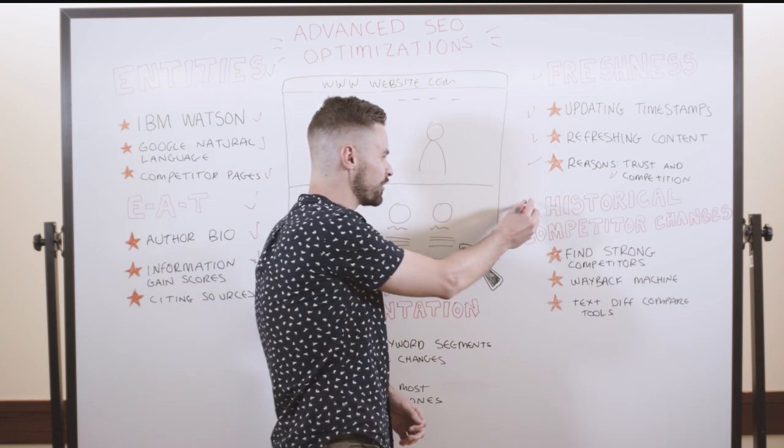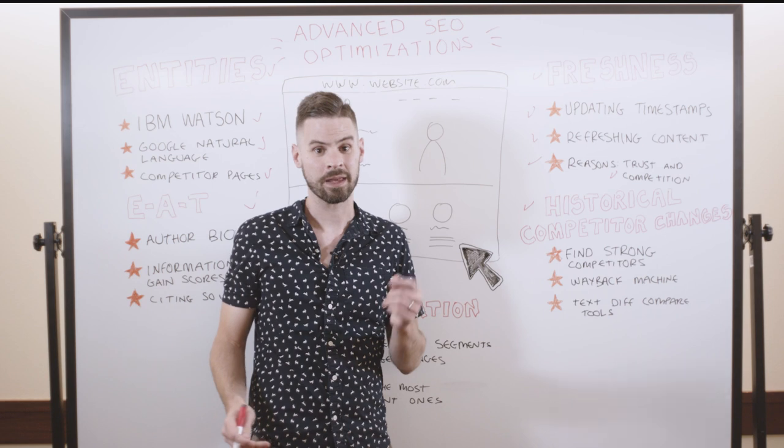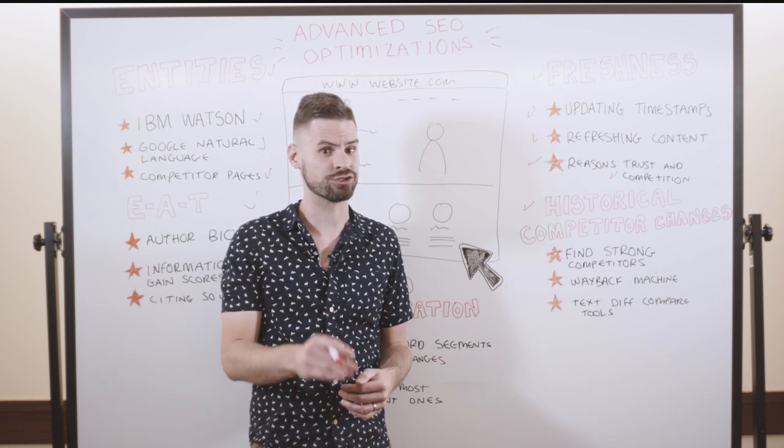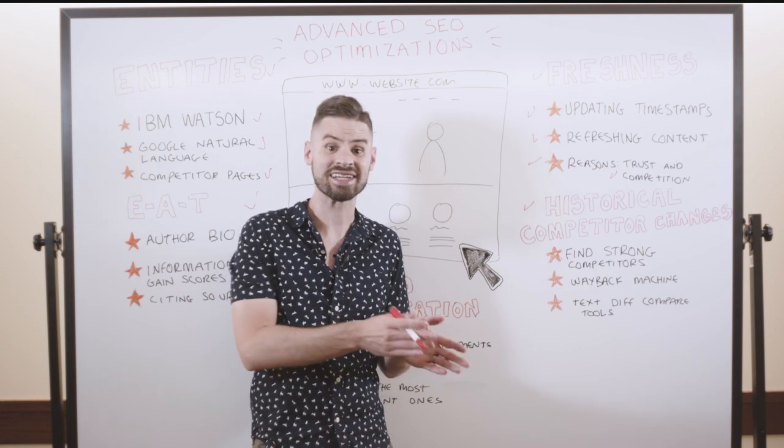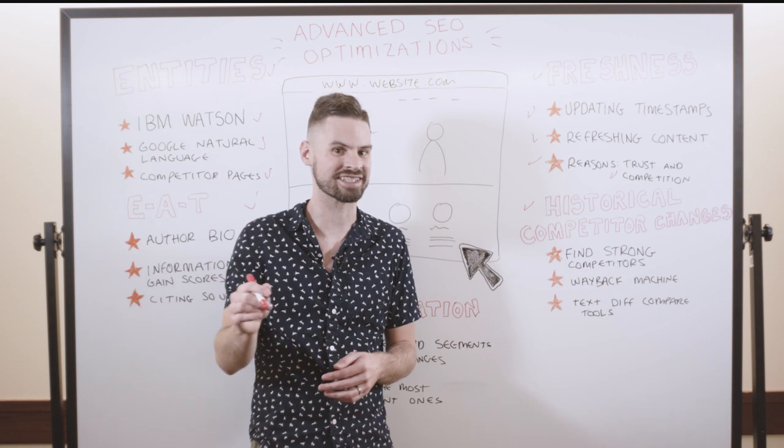Another great way of thinking about your on-page optimizations is this concept of historical competitor changes. Oftentimes, when we think about our on-page optimizations, we're only thinking about what competitors are doing in the given moment, but we're not telling the story of how they've changed their on-page optimizations in order to get to that point.